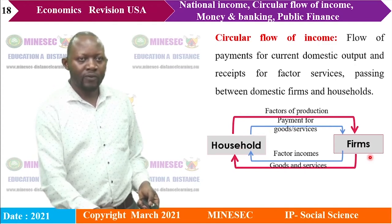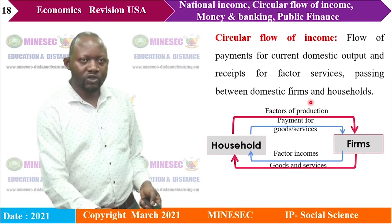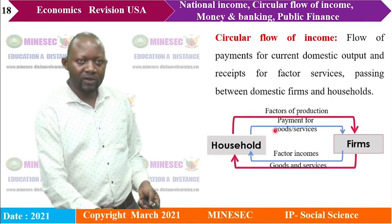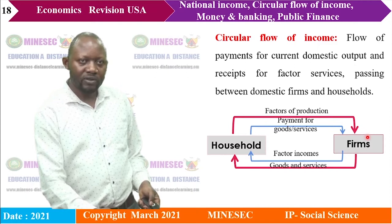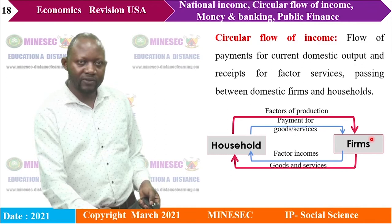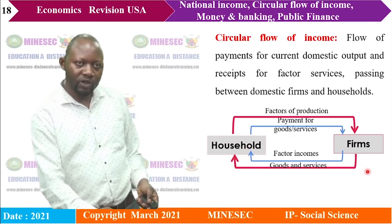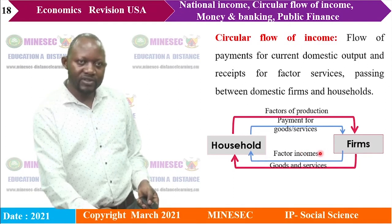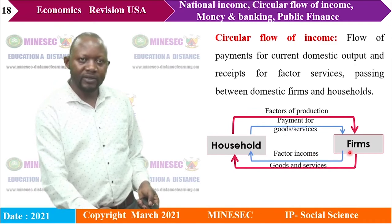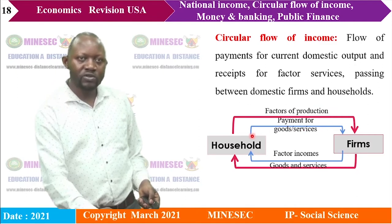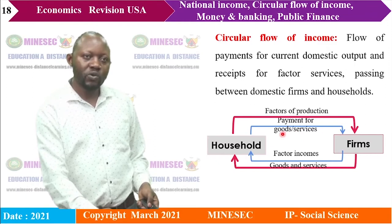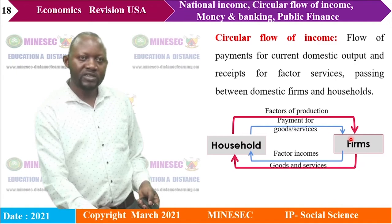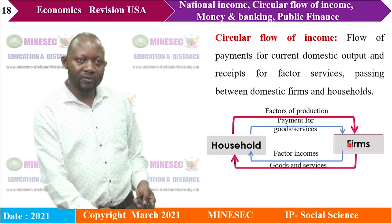When firms receive the factors of production, they use them to produce goods and services that are bought by households. The blue line represents factor incomes — the firm pays factor incomes (rent, wages, etc.) to households. In turn, households pay for goods and services produced by firms, so income flows from households to firms as they pay for goods and services, and again from firms to households as factor incomes. This represents the circular flow of income.